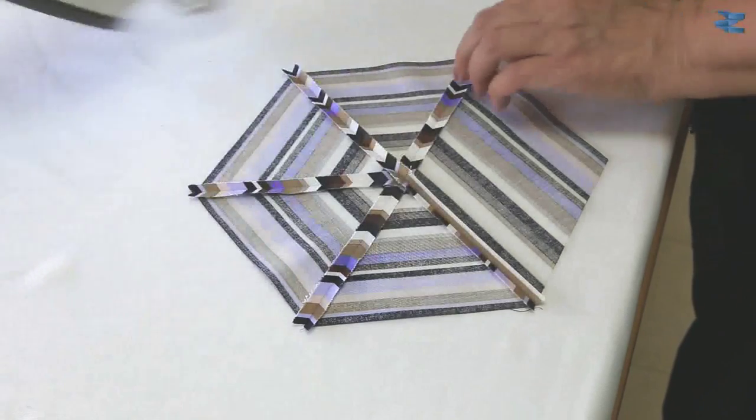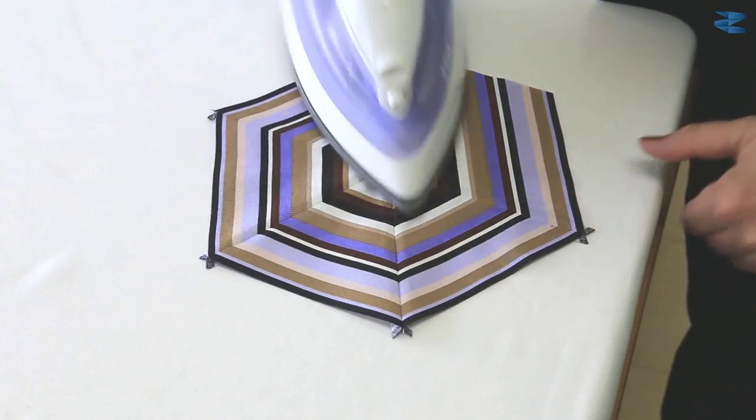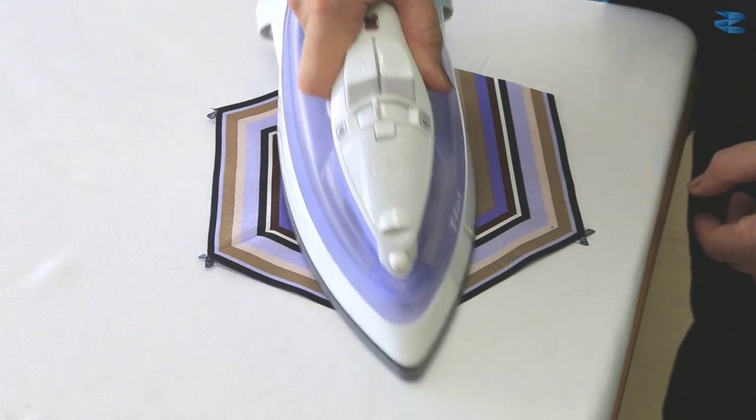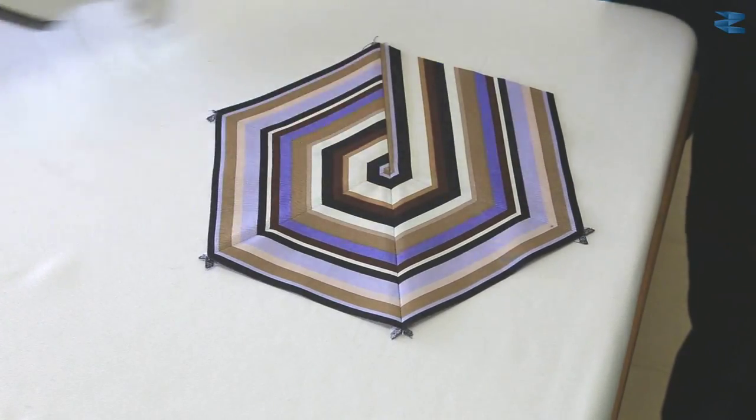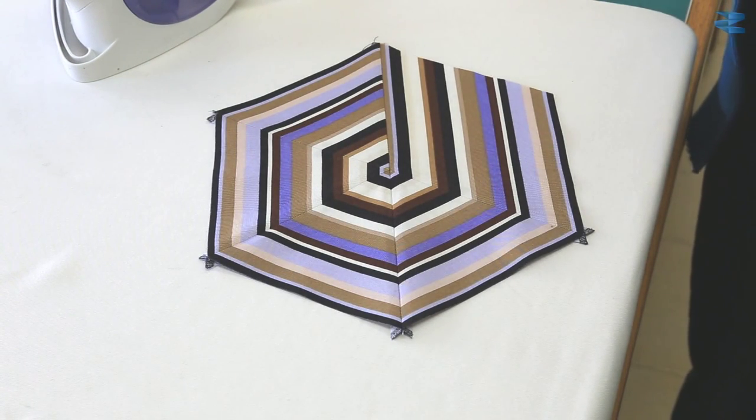Give it a final seam. Flip it over and press again. And there we have it. The letter P hexagon is finished and we're ready to start another one.